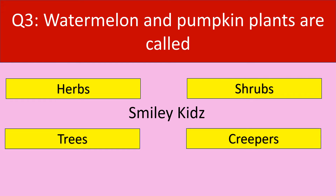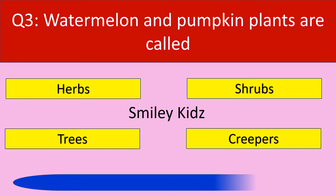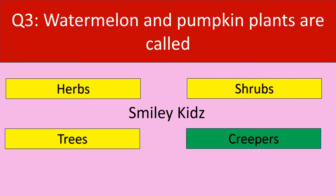Question number 3. Watermelon and pumpkin plants are called — herbs, shrubs, trees, or creepers. Your time starts now. The correct answer is creepers. Watermelon and pumpkin plants are called creepers.